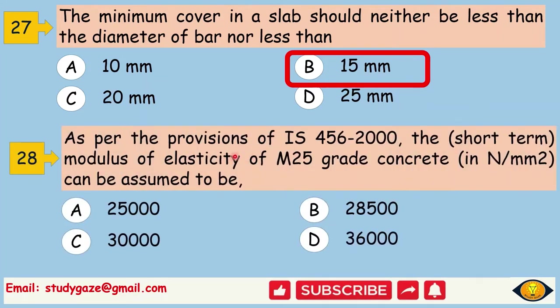As per the provision of IS 456-2000, the short term modulus of elasticity of M25 grade concrete in Newton per mm square can be assumed to be. Answer is 25,000. So, we will apply the formula modulus of elasticity equal to 5000 under root FCK. So, by using this formula we will get the modulus of elasticity is 25,000.